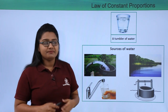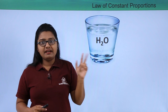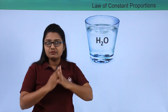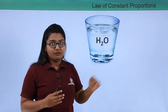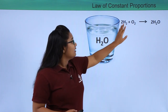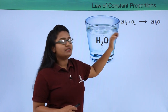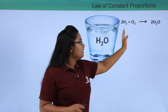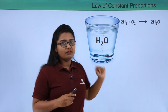Water has the formula H₂O, meaning it has two hydrogen atoms and one oxygen atom. Whatever the source, water must always have two units of hydrogen and one of oxygen. In the reaction forming water, two hydrogen molecules combine with one oxygen molecule to give two molecules of water.